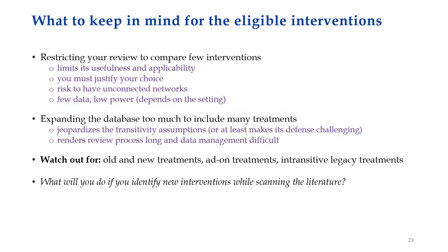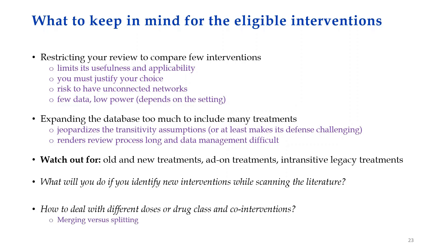At the protocol stage, we need to consider what we will do if we identify new interventions that we didn't have in mind. We should define whether we plan to include them or not. We also need to define how we are going to deal with different doses, different drug classes, and co-interventions — for example, whether to merge or split the different doses, depending on which assumptions are more plausible.